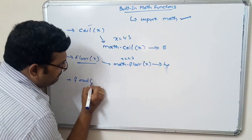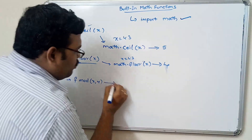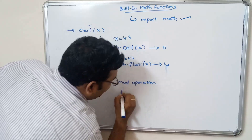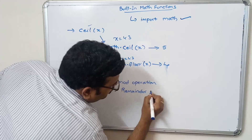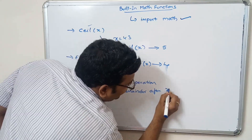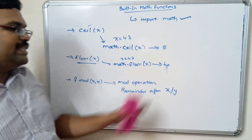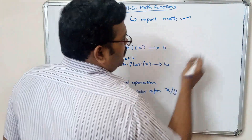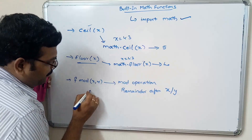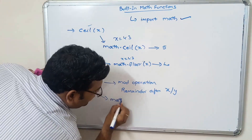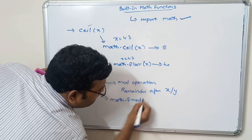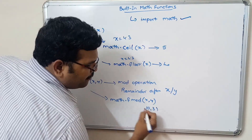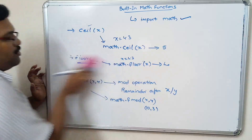Next is fmod(x, y). This will give the modulo operation — it performs x divided by y and the remainder is taken as the result. For implementation, we again use math.fmod(x, y). Let us take x=10, y=3.